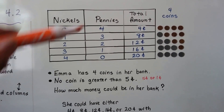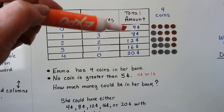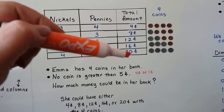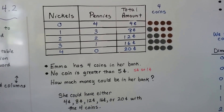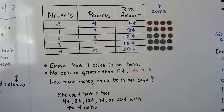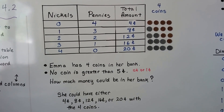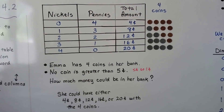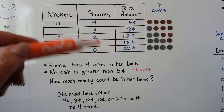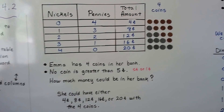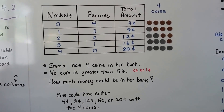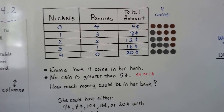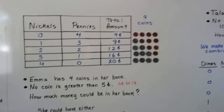So she could have either four cents, eight cents, twelve cents, sixteen cents, or twenty cents in her bank with those four coins. We don't know exactly how much she has, but those are the possible amounts she could have with four coins. Let's try one that's a little bit different.